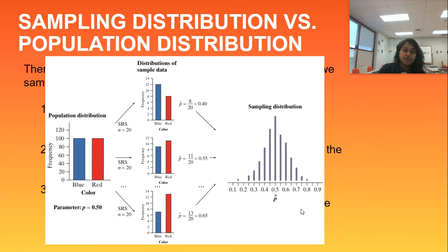Here are our three different types of distributions here. We have a population distribution on the left hand side where you see a frequency bar graph right there. Then we have distributions of sample data. So you can see I did an SRS with a trial of 20 on the top and then an SRS of trial 20 in the middle and SRS of trial 20 on the bottom. But what do you notice about that P hat value?